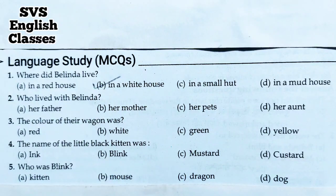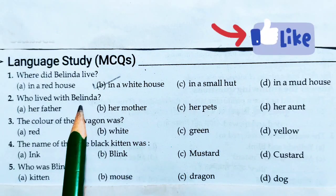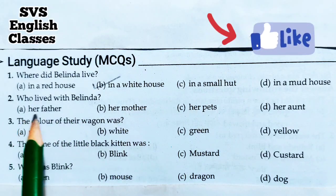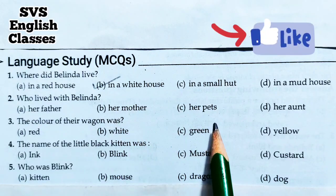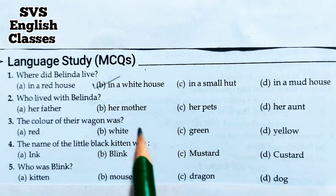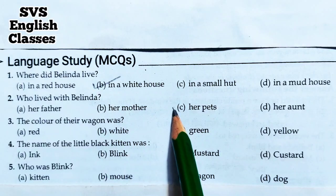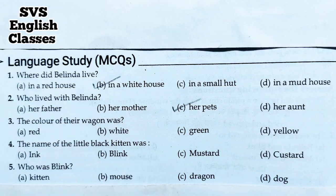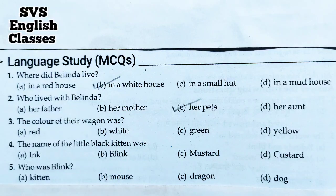Number two: Who lived with Belinda? A. Her father, B. Her mother, C. Her pets, D. Her aunt. The most suitable choice is C. Belinda's pets lived with her - there were four of them: Ink, Blink, Mustard, and Custard. These four animals lived with Belinda in her house.